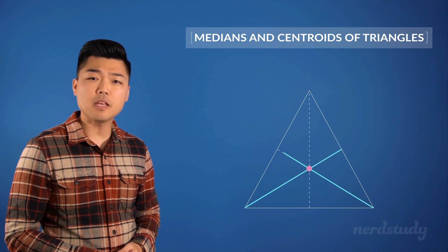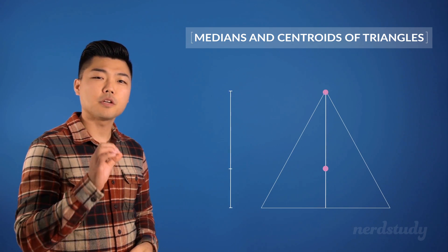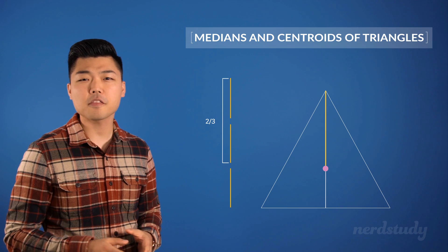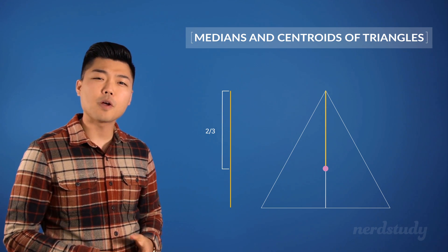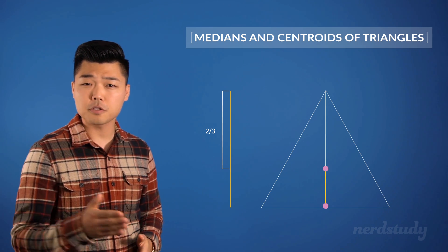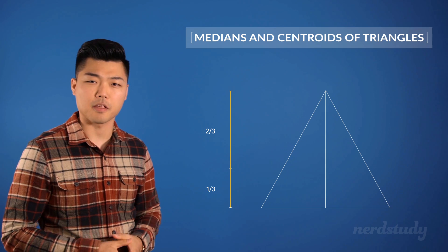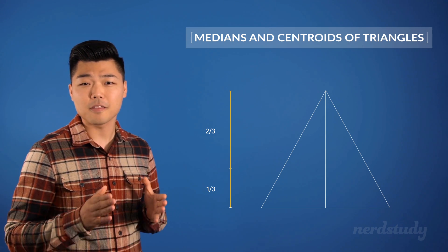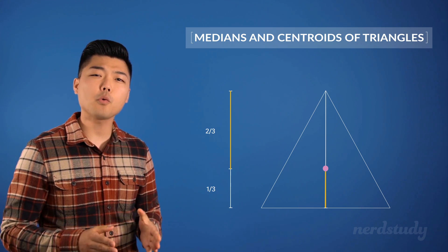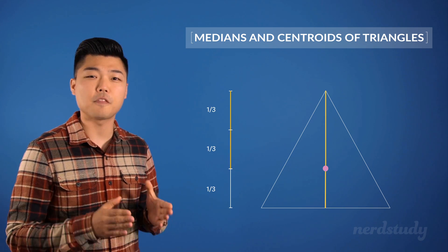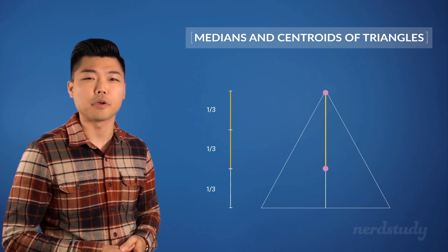Now if we take any median — for example this one — and go from the point to the centroid, the length is always two thirds of the entire length of the median. The rest of the length from the centroid to the midpoint is one third of its entire length. Another way to see this is that the segment from the midpoint to the centroid is always half the length of the segment from the centroid to the point.